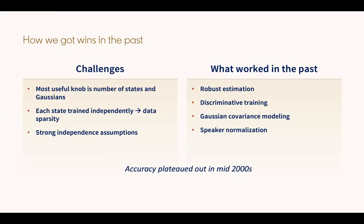We also had to train each state separately, which caused data sparsity, requiring robust estimation. Discriminative training is another technique that addressed data sparsity — with discriminative training, we could use all data to train the parameters of all states. Another problem with traditional systems was strong independence assumptions: we assumed frames are independent of each other, and within each frame, the components of feature vectors are also independent. Techniques like discriminative training, Gaussian covariance modeling, and so forth addressed these issues, but only indirectly.